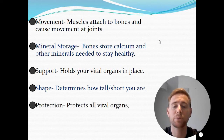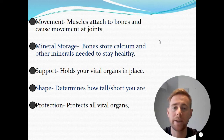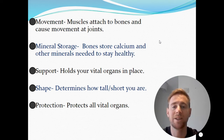We then have protection. Our bones protect our vital organs. We have our cranium that protects our brain, and we have our ribs and sternum which protect our lungs and our heart.